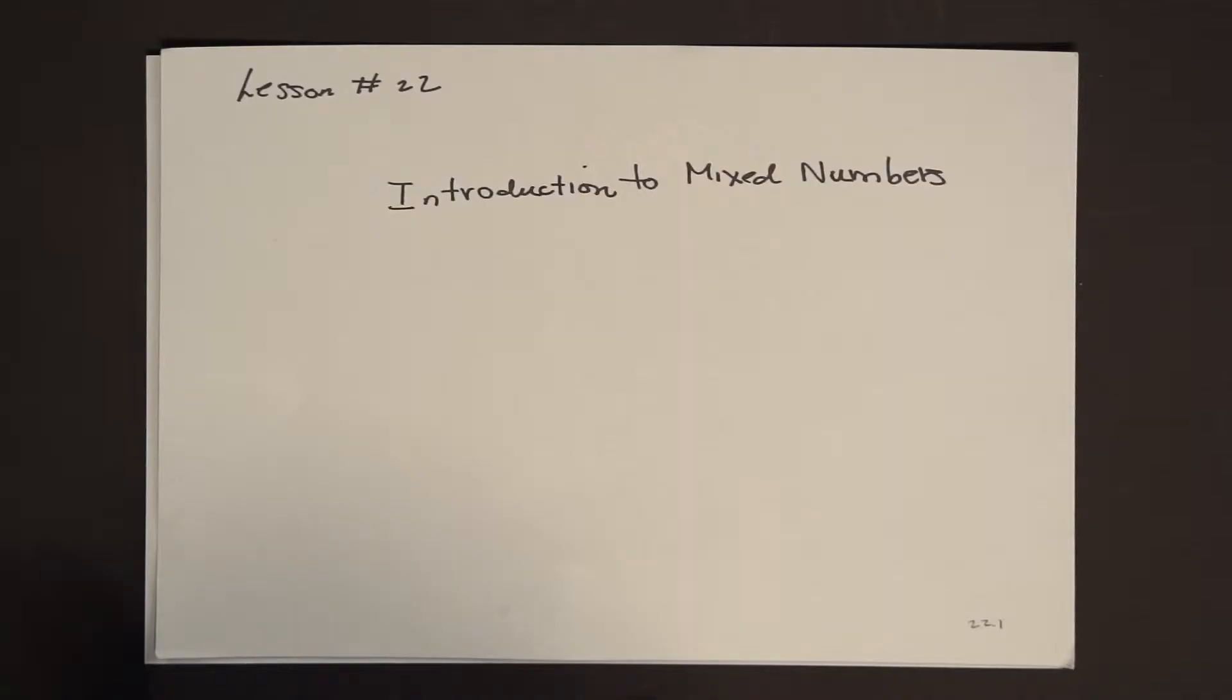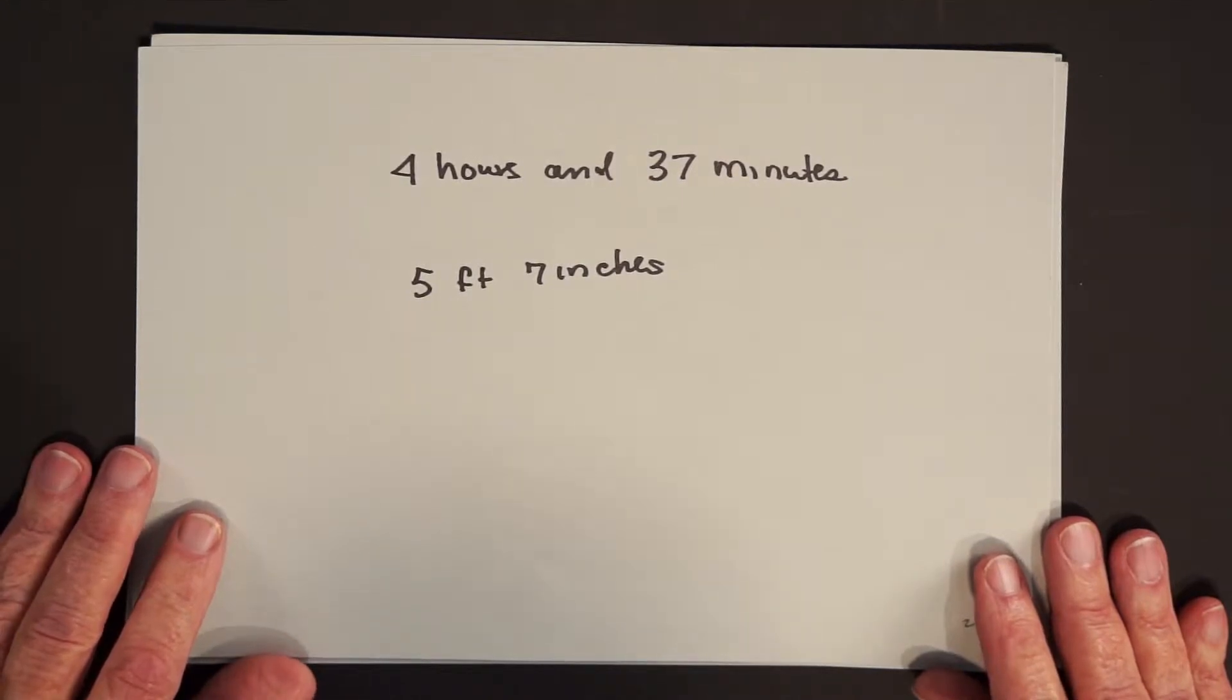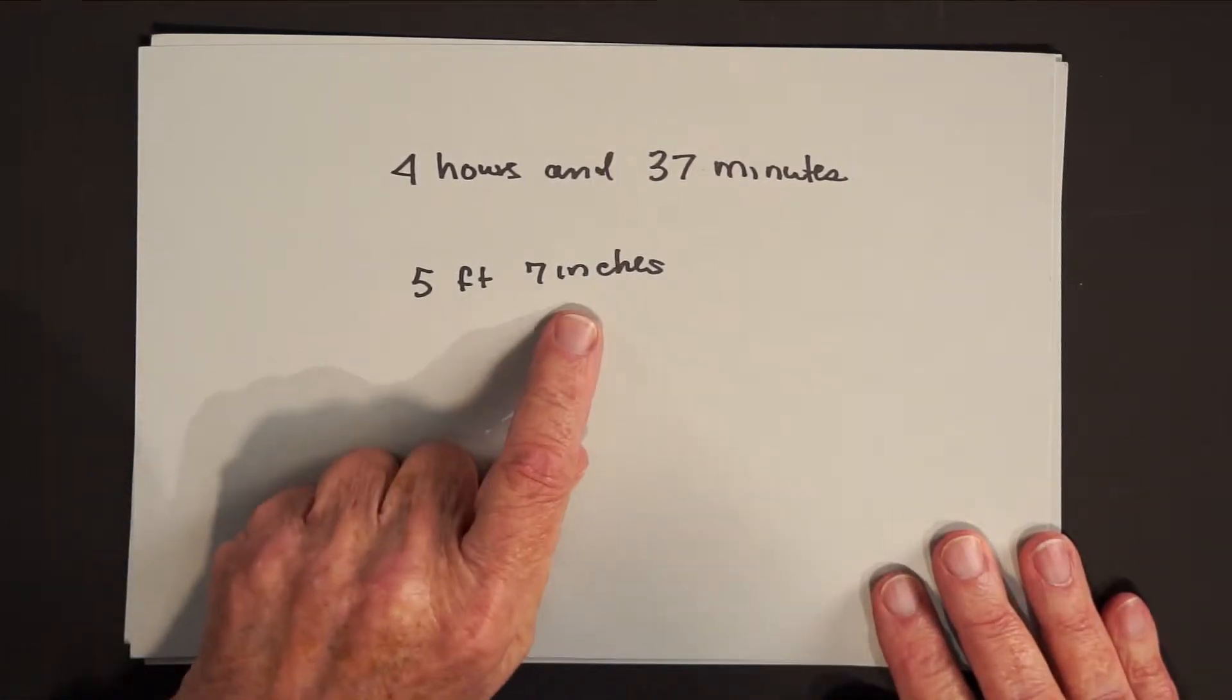So with that in mind, let me start by showing you that we've already dealt with mixed numbers in real life, but never really thought about it because the nouns were present. For example, we say such things as 4 hours and 37 minutes, 5 feet and 7 inches.